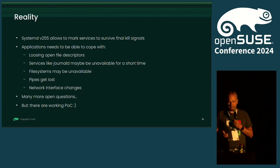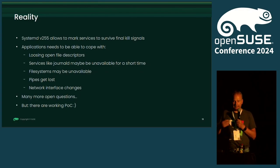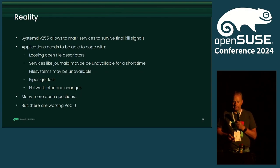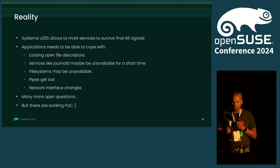This is fixed in systemd 256. journald may be unavailable for a short time, so if you use the SD journal functions from within systemd, be able to cope with it — wait some seconds and try again. File systems may be unavailable for a short time. Pipes get lost if not managed by systemd itself. Network interfaces can change. There are a lot more questions, but meanwhile I have several proof-of-concept implementations for different scenarios and good test coverage of where the problems are.